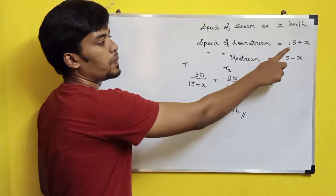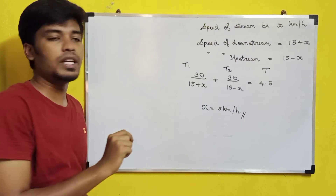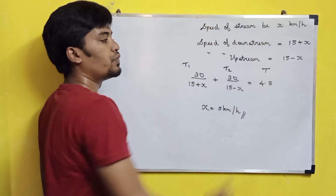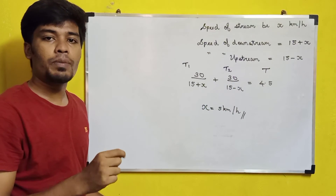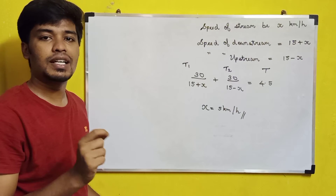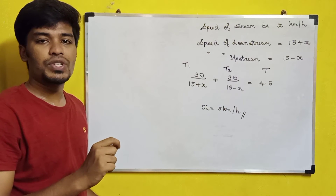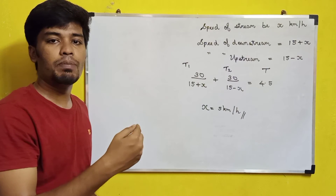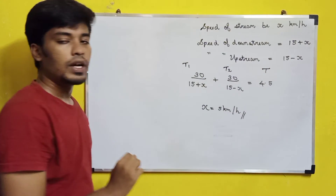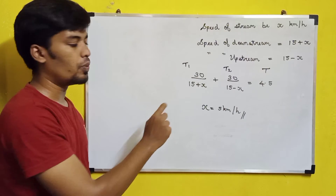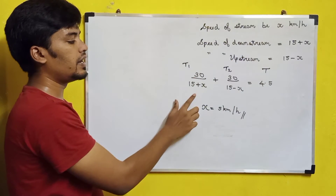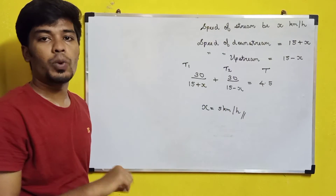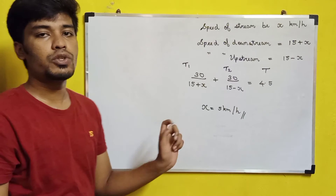The downstream speed is: speed of boat in still water plus speed of stream, which is 15 plus x. The upstream speed is: speed of boat in still water minus speed of stream, which is 15 minus x. The total time equation is t1 plus t2 equals 4.5 hours. Downstream time t1 equals 30 divided by (15 plus x), and upstream time t2 equals 30 divided by (15 minus x). Solving this equation for x gives the stream speed as 5 km per hour.